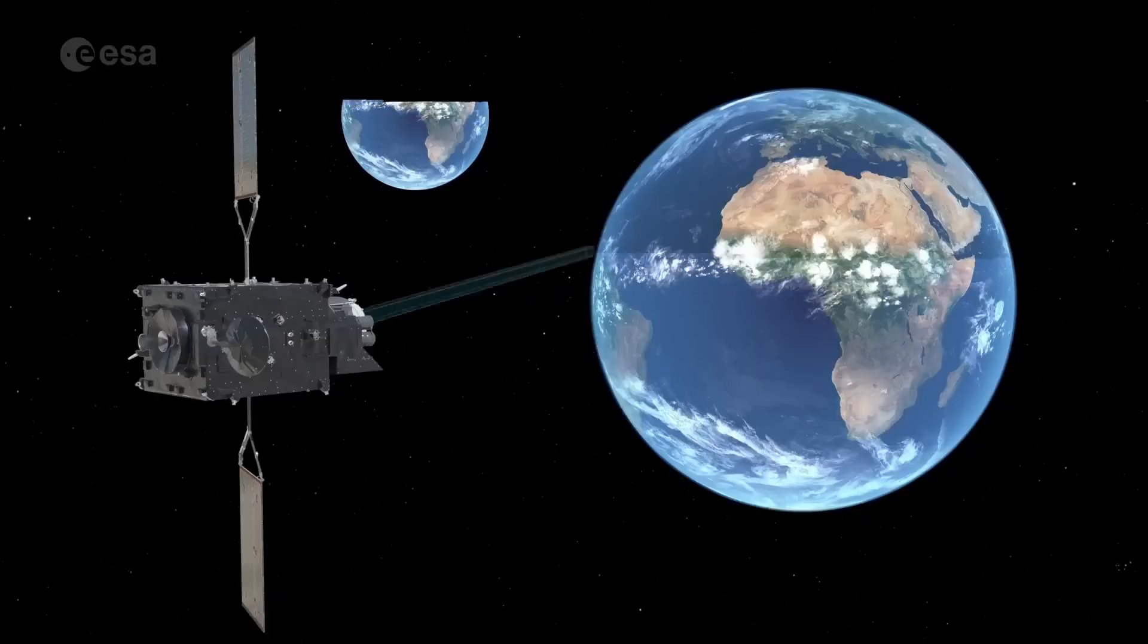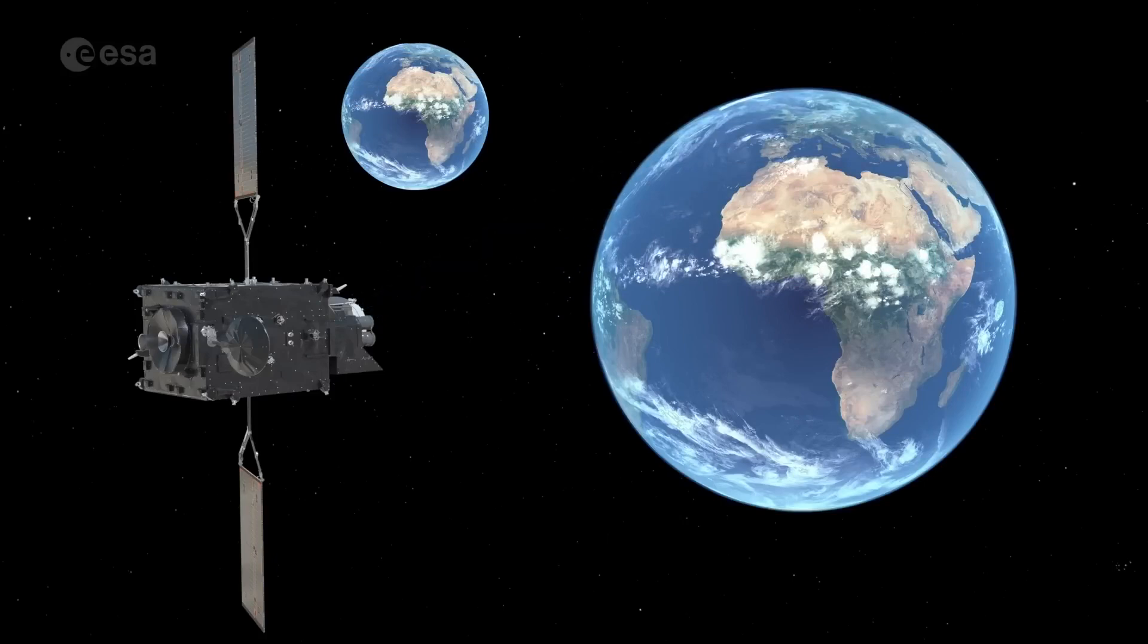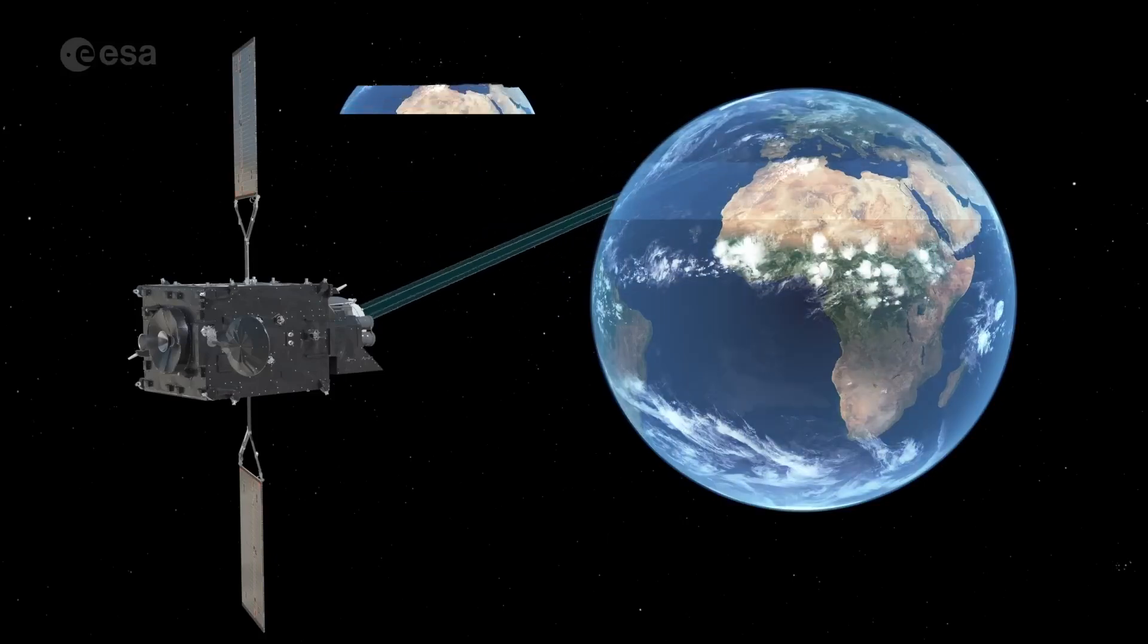The satellite's flexible combined imager can scan the entire Earth disk in 10 minutes and deliver images over Europe in just 2.5 minutes.